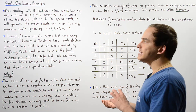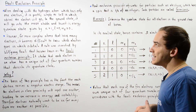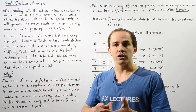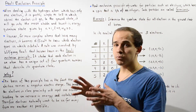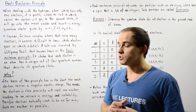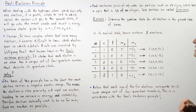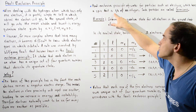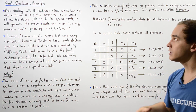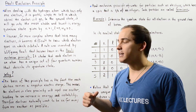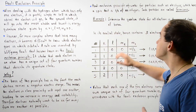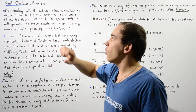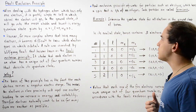The Pauli Exclusion Principle doesn't only work for electrons — it also works for protons and neutrons. In fact, it applies to particles we call fermions: particles such as electrons that have a spin of one-half of an integer, either positive one-half or negative one-half. Other particles, such as photons, don't have this spin property, so we cannot apply the Pauli Exclusion Principle to them.